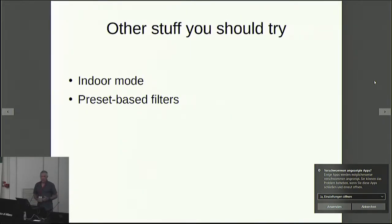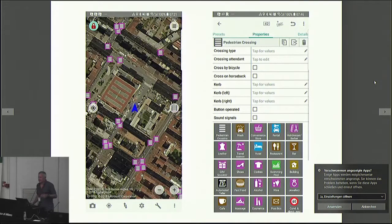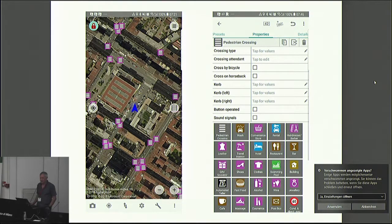Stuff that you should try — these are things that have been around for quite a long time: indoor mode and preset-based filters. Preset-based filters are interesting because there was a Twitter discussion just before I came here about all the pedestrian crossings in Milano not having curb tags. You can make Vespucci into a dedicated pedestrian crossing app with preset filters in about 10 seconds.